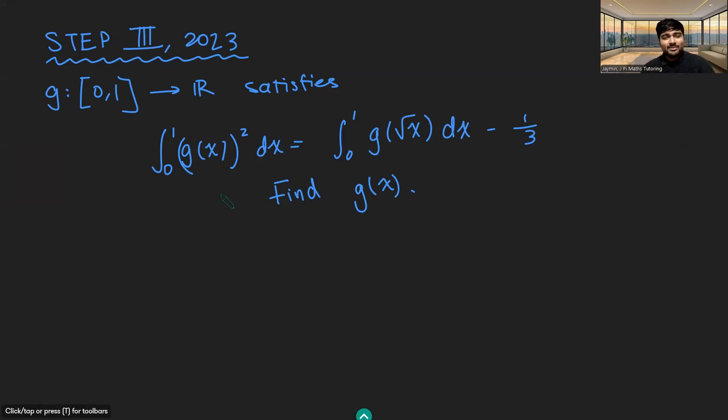This is kind of remarkable. All we're told is what the area underneath this curve is between 0 and 1. It just so happens to equal the area under this curve minus 1/3, and somehow from that we're able to determine uniquely what g(x) is. The way we're going to do this is by doing a substitution. We're going to look at this integral, and it's got a √x in it, so I want to have that as just g(x).